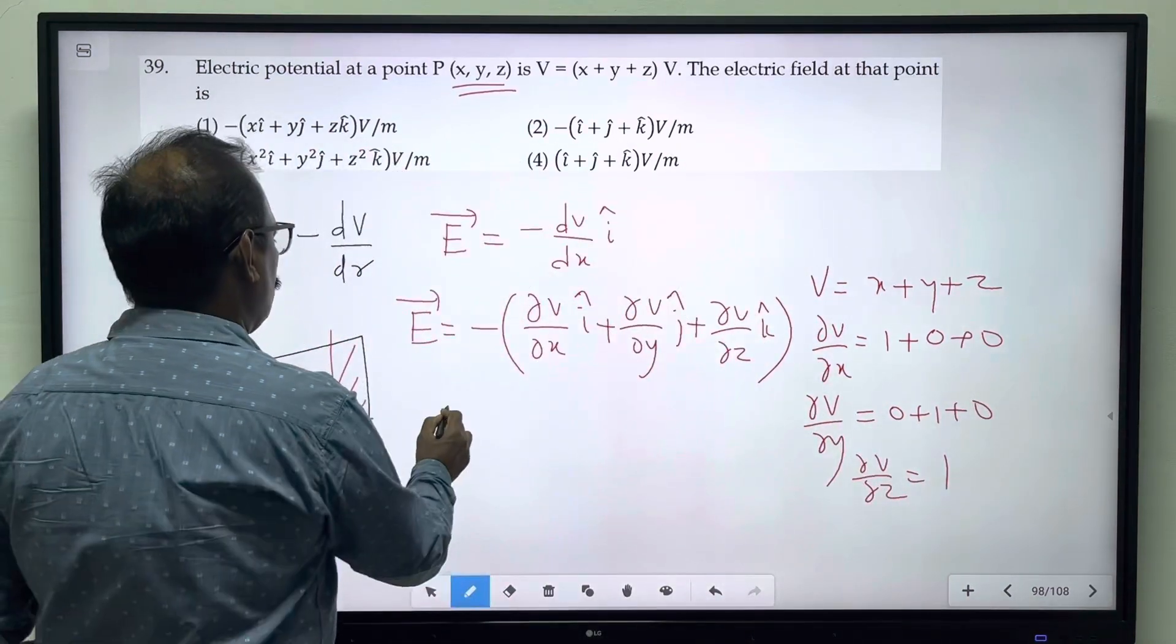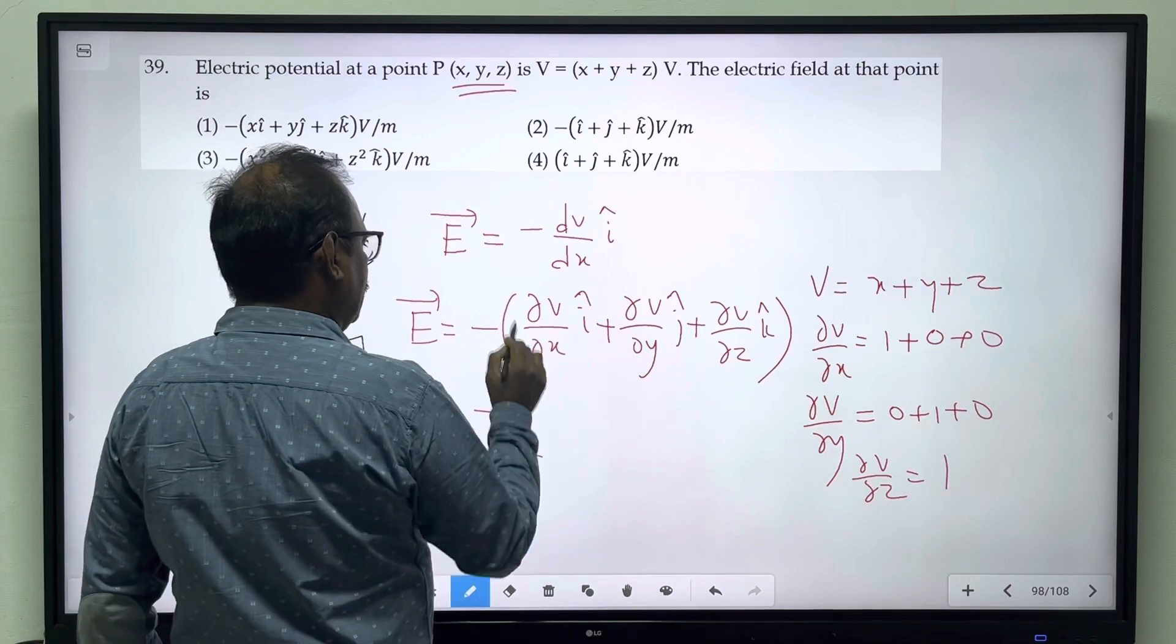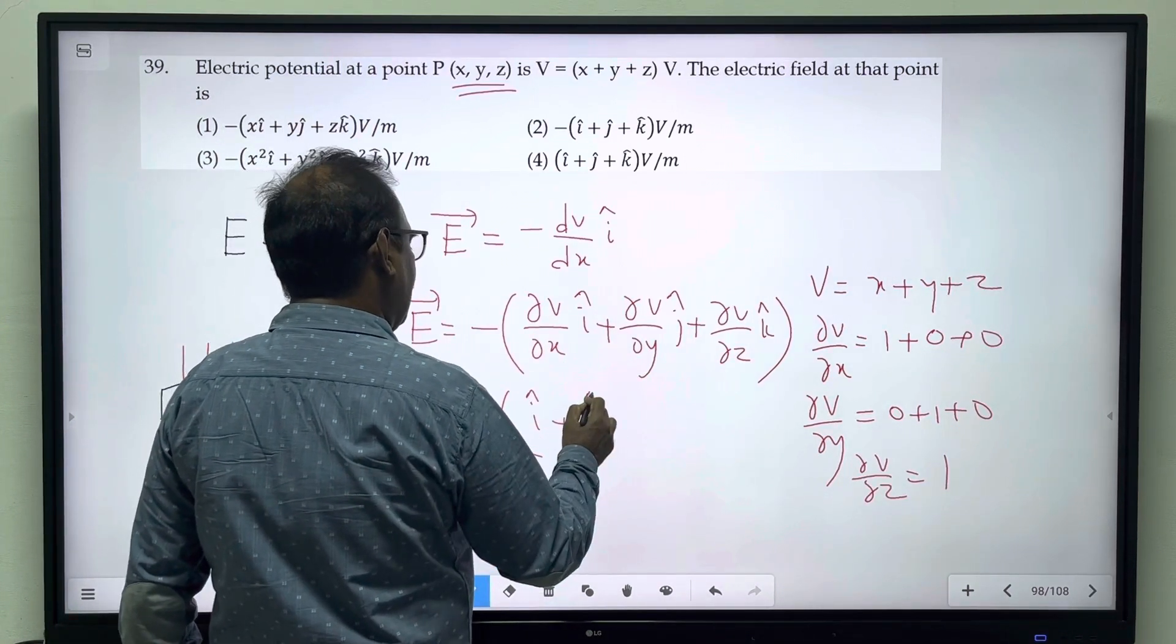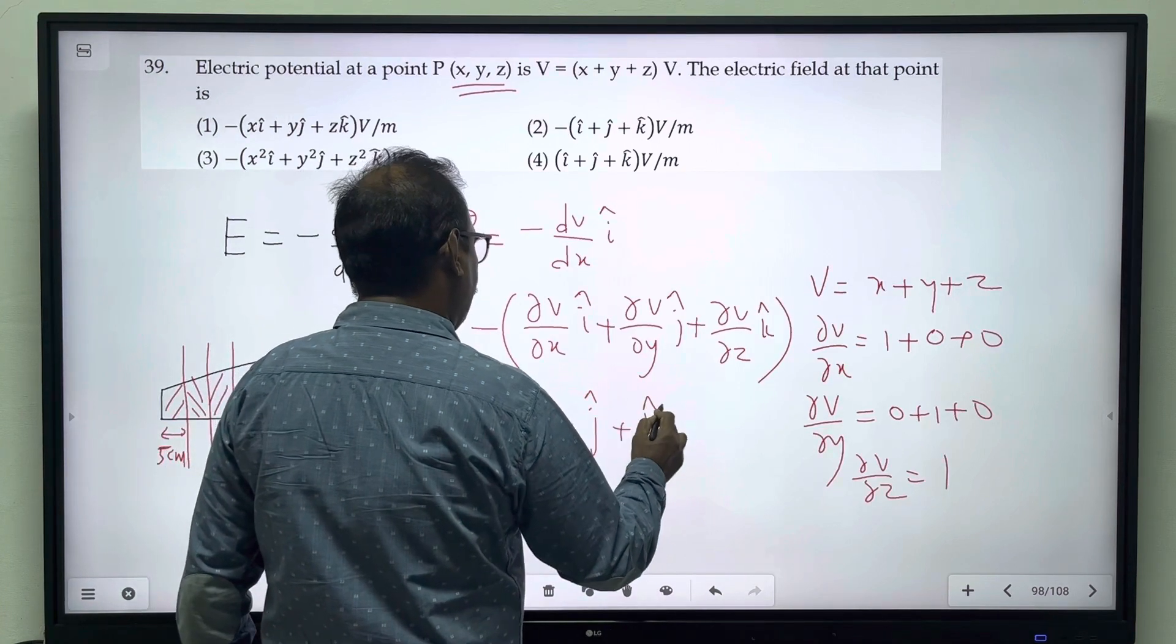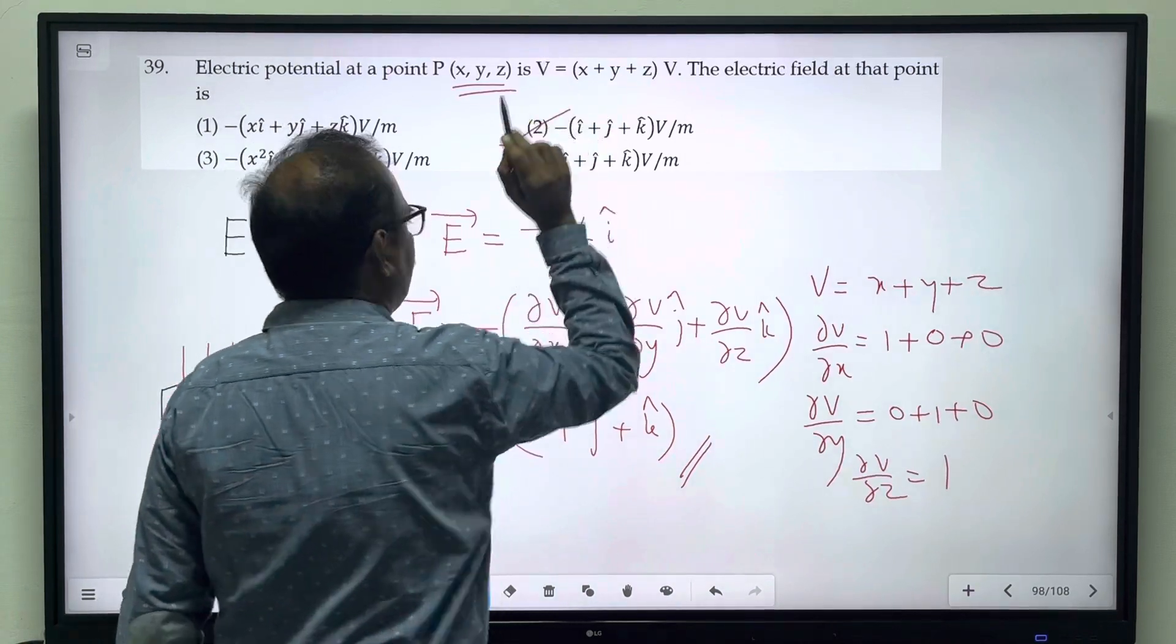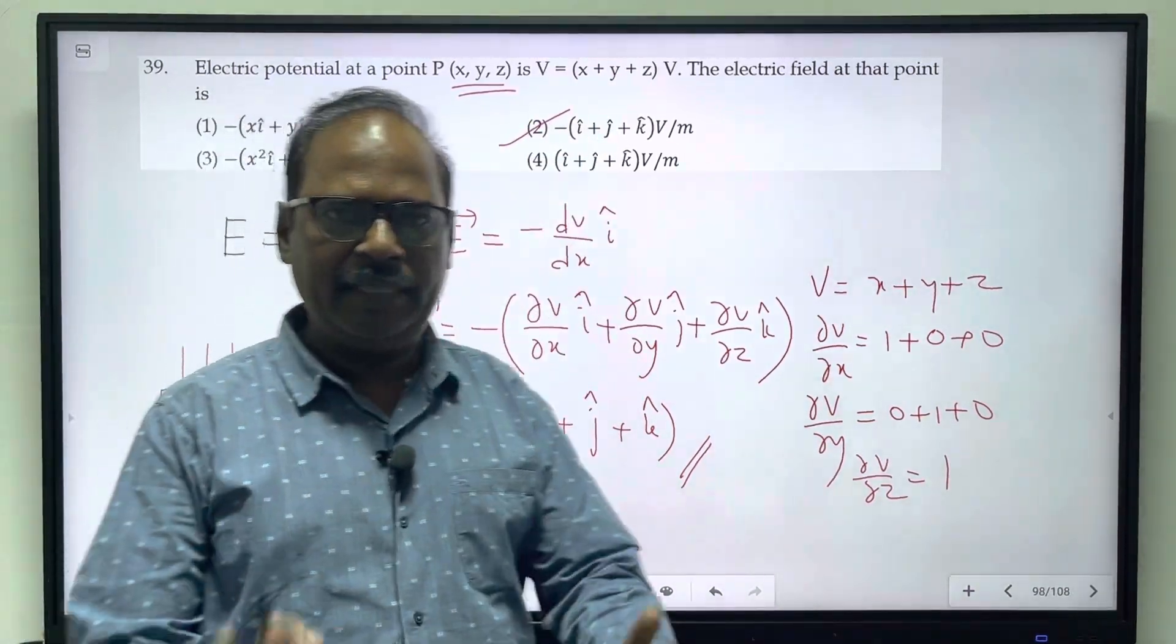Now let's substitute. ∂V/∂x is 1. This is the correct answer. Thank you for watching.